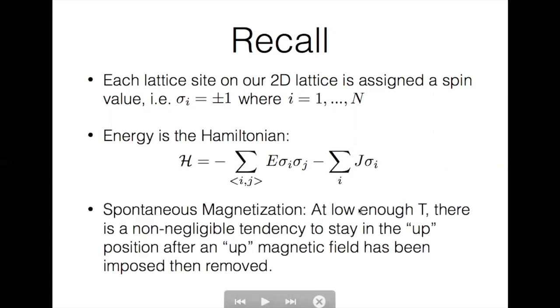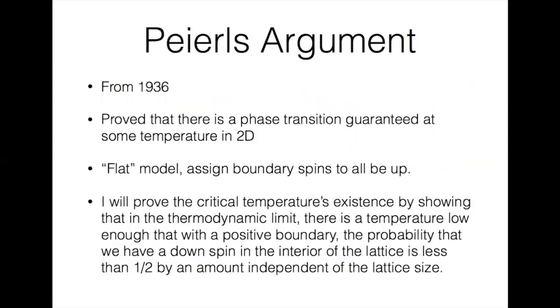We'll be looking at the idea of spontaneous magnetization. At a low enough temperature, there is a non-negligible tendency for a spin to stay in the up position after an up magnetic field has been imposed and then removed. This video will be a presentation of Peierls's argument from 1936.